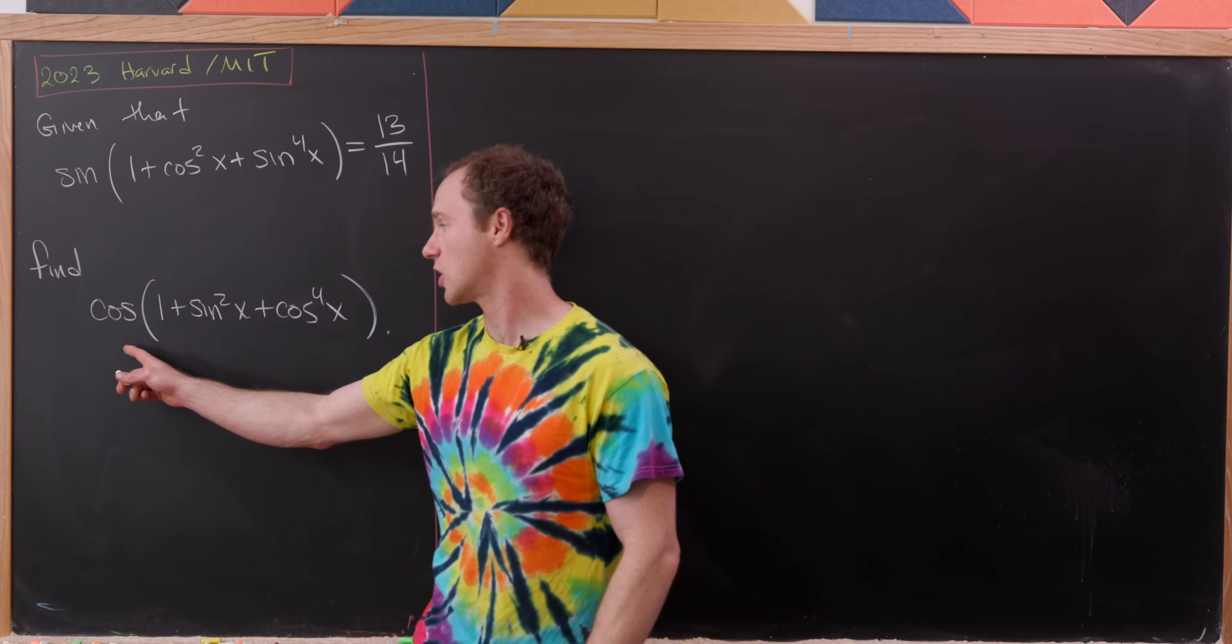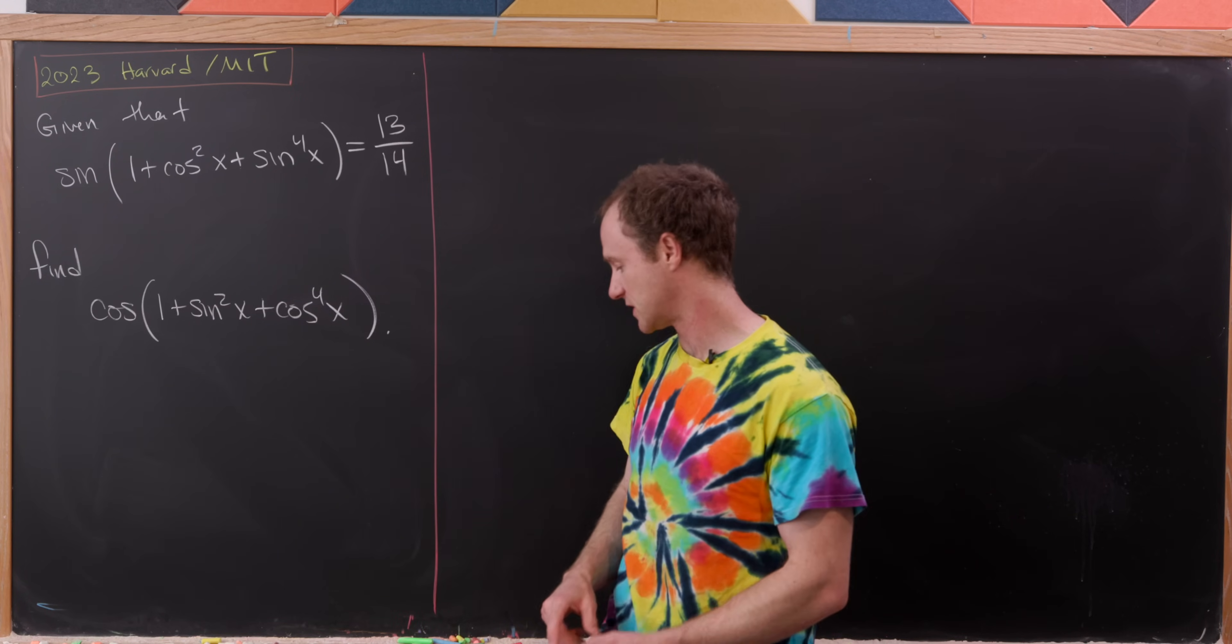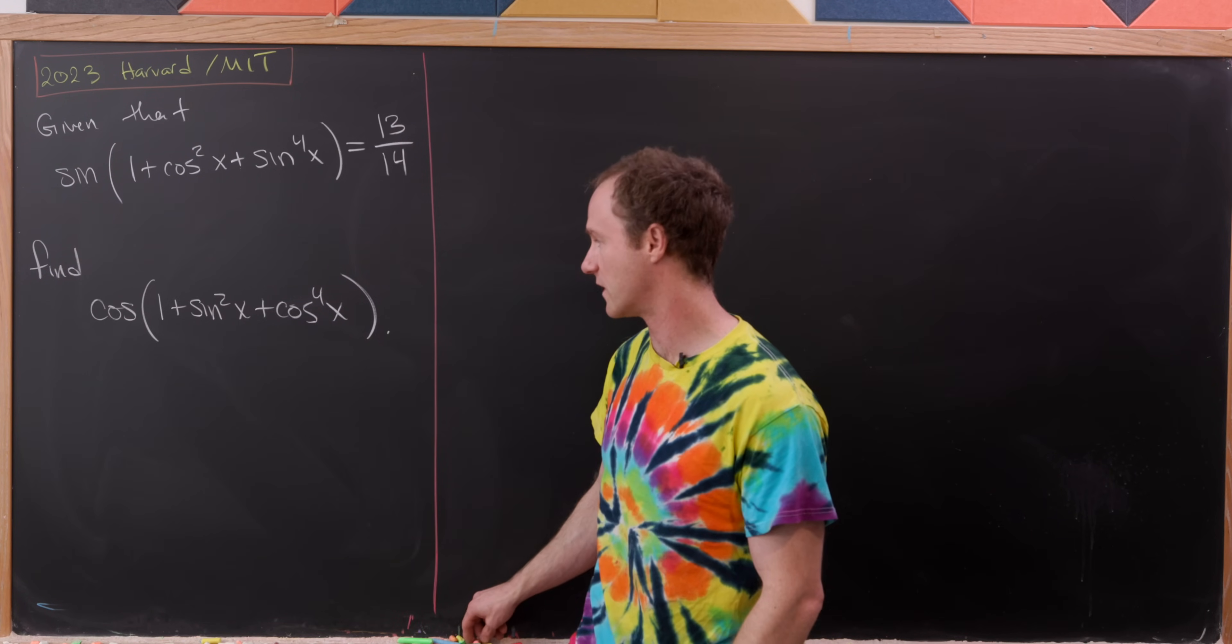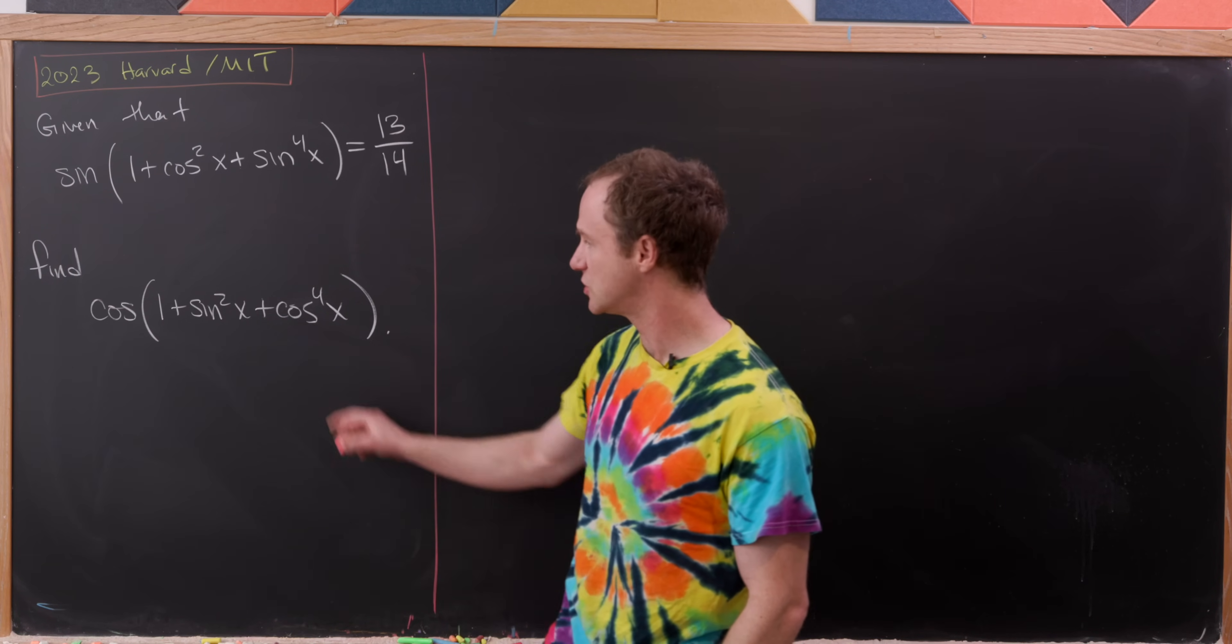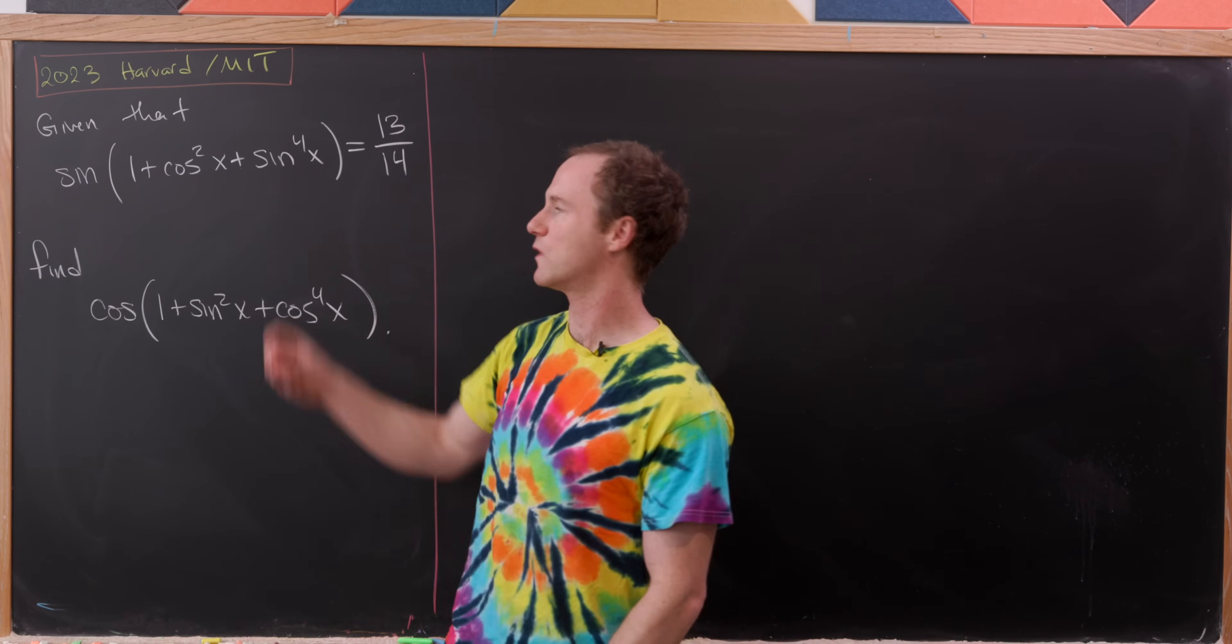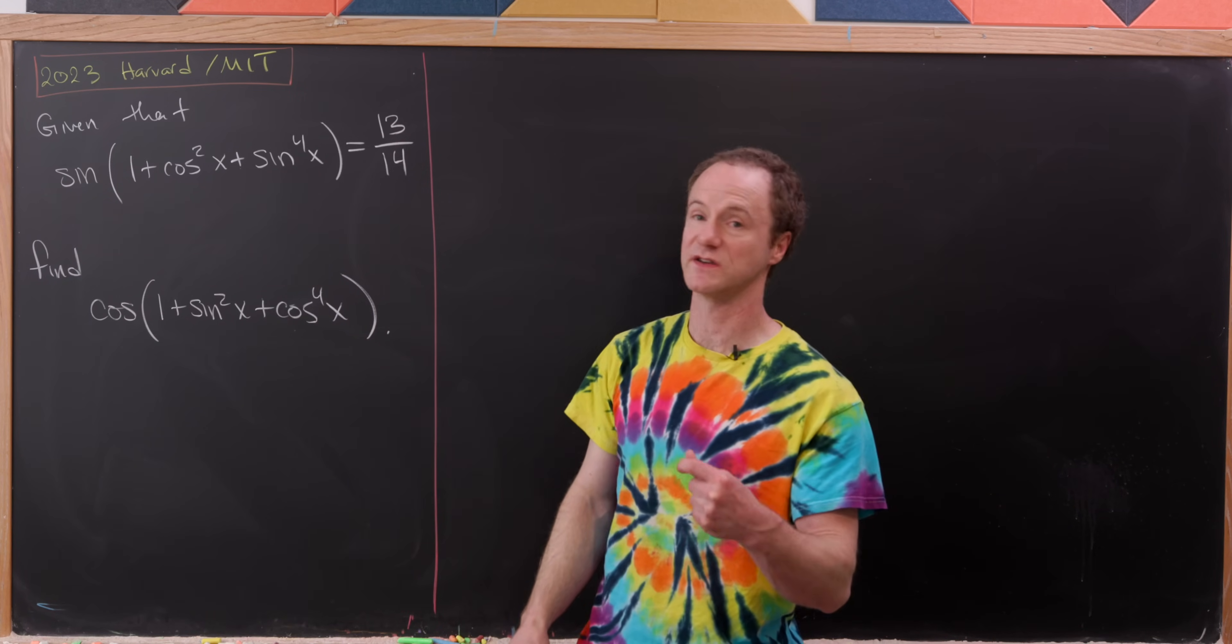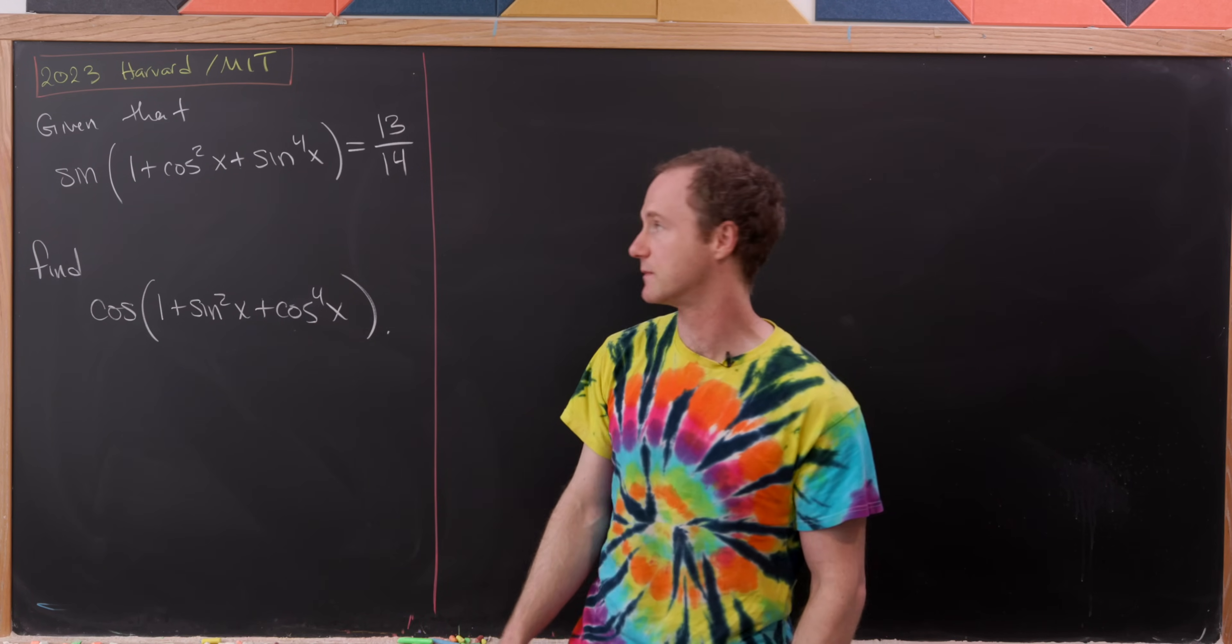Our goal is to find cosine of (1 + sin²x + cos⁴x). Observe that these two inputs of sine and cosine are different. This top one has a cos²x and a sin⁴x, and we kind of have the opposite situation in the bottom here.